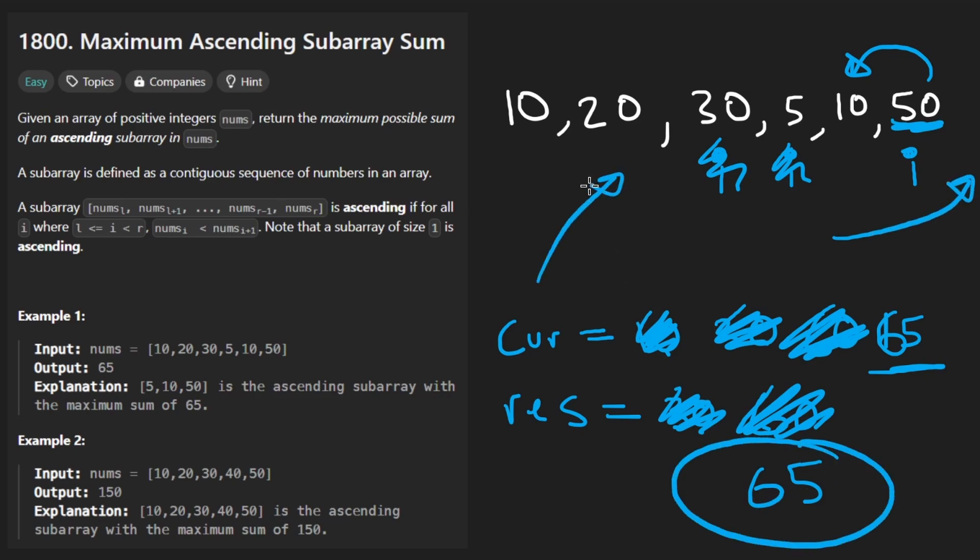So the nice thing about this solution is, as you can see, it just scans through the input once. We reduce the time complexity from n squared to linear. And we don't need any extra data structures. So the space complexity is constant. Now let's code it up.